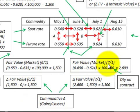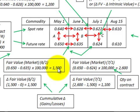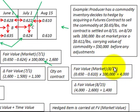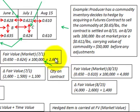Looking at our next period of July 1st, we take the gain of $2,600 calculated for the fair value and subtract the previous period's $1,500 gain, giving us a $1,100 change in fair value for July 1st. Then for our last period of August 15th, we had a gain of $4,000 for the period, and subtracting the previous period's gain of $2,600 from $4,000, we have a change in fair value of $1,400.